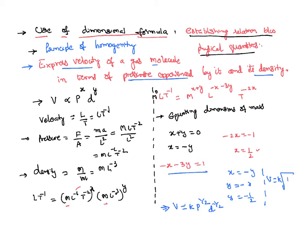So I can write the equation: velocity equals some constant times the square root of pressure by density. This is how we can find a relation between physical quantities using dimensional analysis.